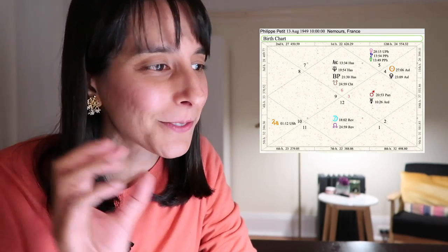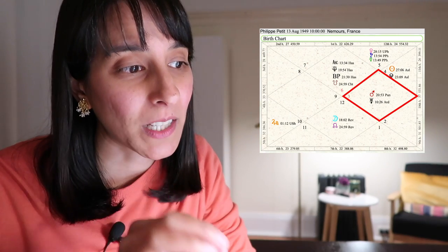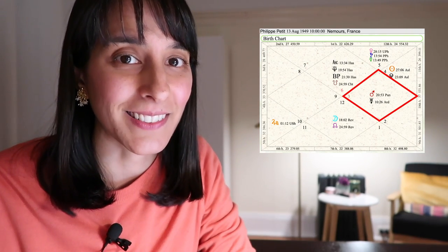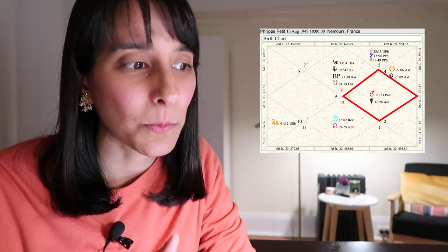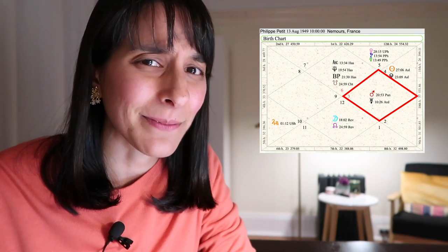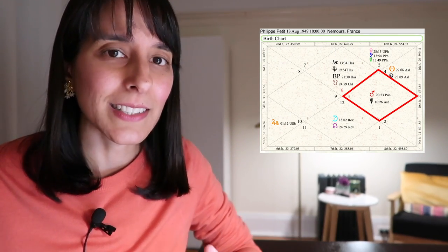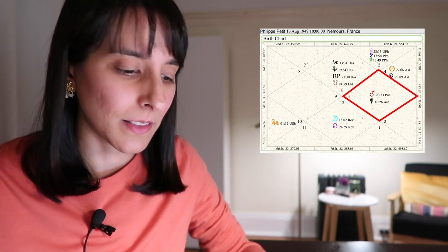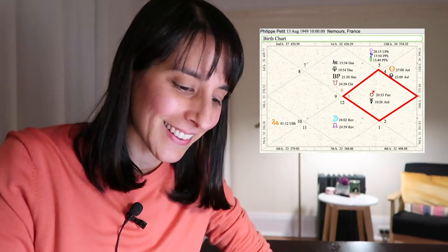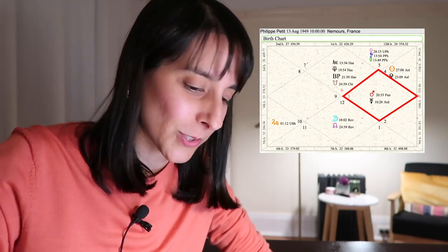Next example we're going to take a look at is Philippe Petit. Mars alone in the 10th house. So again, it was performance art. He performed. The structures were existing. He had these - and I suppose I could, I don't know if I could draw this. Let's see if I can draw it. I can't draw this. But he had these two buildings here. I can't really draw 3D.